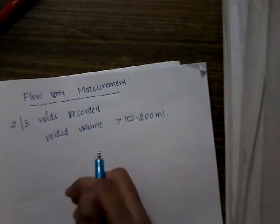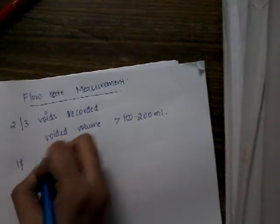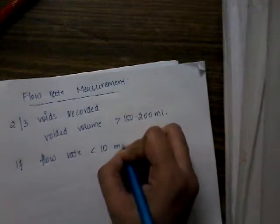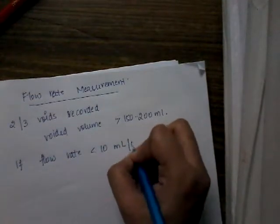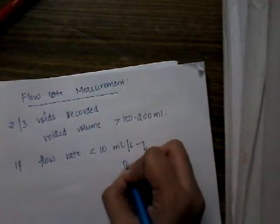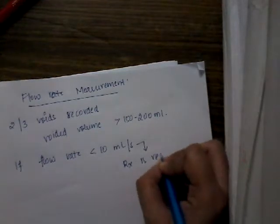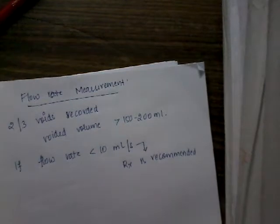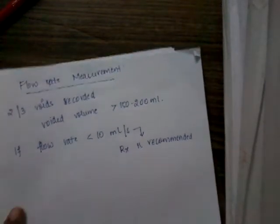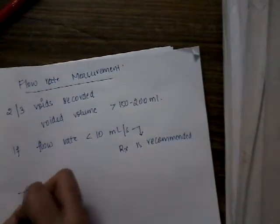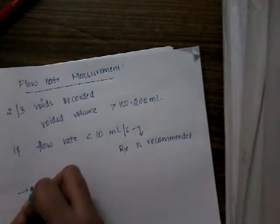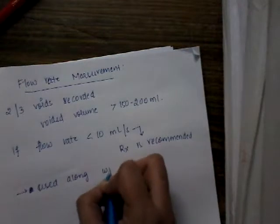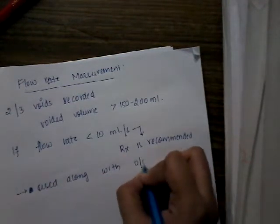If flow rate is less than 10 milliliters per second, then treatment is recommended. Generally this flow rate measurement is used along with ultrasound measurement.